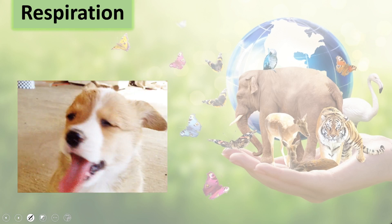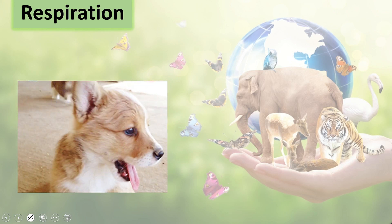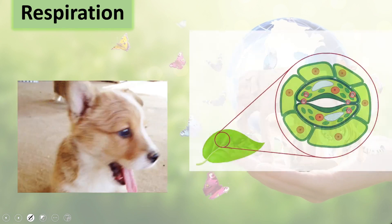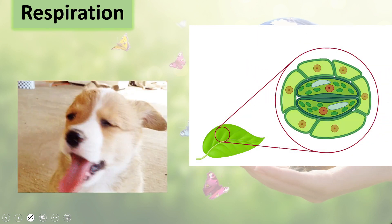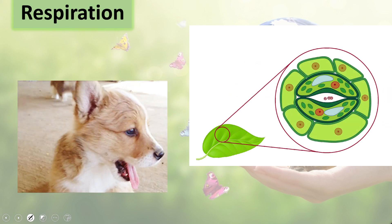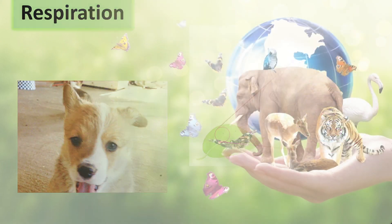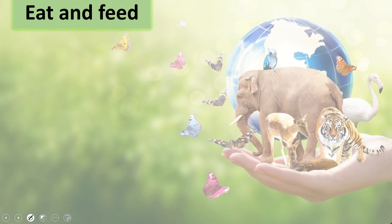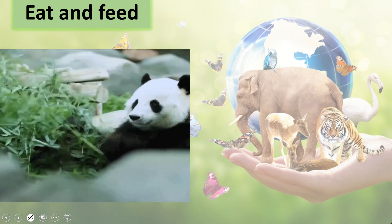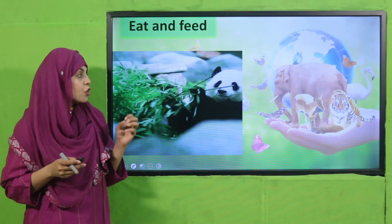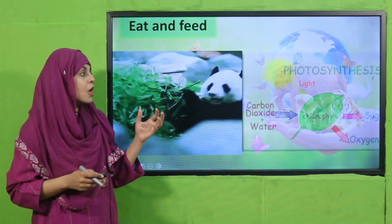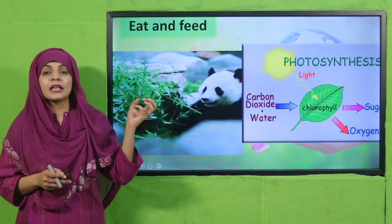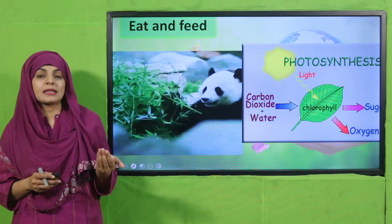Both plants and animals need air for respiration. Plants need carbon dioxide, whereas animals need oxygen. Next is eating and feeding: both need energy to grow, to work, and to stay alive. Animals eat other plants and animals, whereas plants make their own food through the process of photosynthesis.